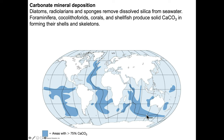When talking about carbonate mineral deposition in the deep sea, we need to consider other deposited materials. Diatoms, radiolarians, and sponges remove silica from seawater, whereas foraminifera, coccoliths, corals, and shellfish produce solid calcium carbonate — aragonite or calcite — in their shells and skeletons. Looking at deep-sea basin sediments, we find lots of calcium carbonate along the mid-ocean ridge in the Atlantic, because the mid-ocean ridge isn't as deep as the rest of the Atlantic. The same pattern appears in the Pacific and Indian Ocean, meaning depth has something to do with the preservation potential of calcium carbonate.